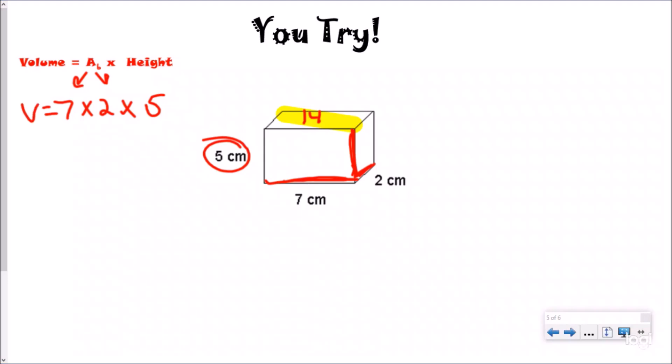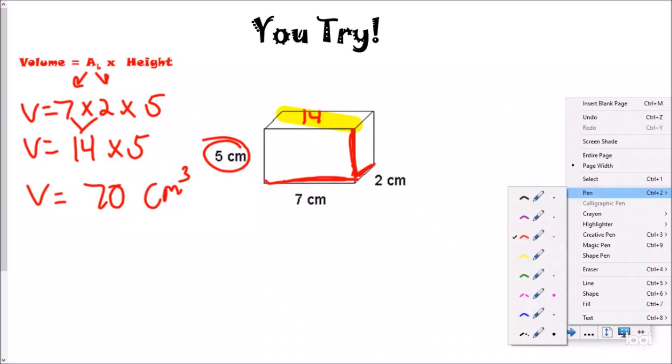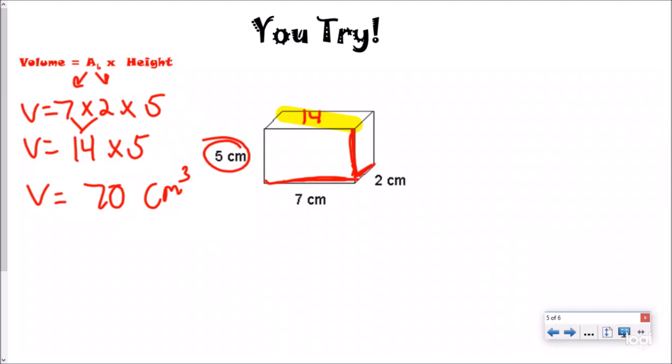So I'm going to multiply that times five. And so my volume, I know seven times two is 14, and then now I need to multiply that times my height. And so my volume would be 70 centimeters cubed. So again, we used our length times our width to find the area of our base first. These two things is the same as that. And then we multiply that by our height, how many layers we had.